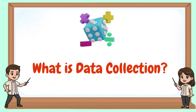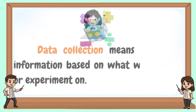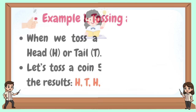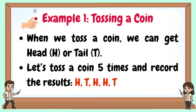What is data collection? Data collection means gathering information based on what we observe or experiment on. Example 1: Tossing a coin. When we toss a coin, we can get head or tail. Let's toss a coin five times and record the results.